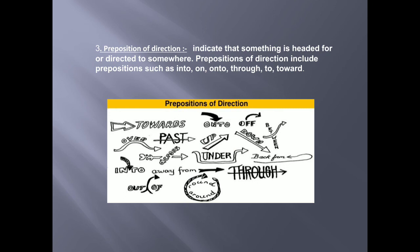Now, we will move on to the third one that is preposition of direction which indicates that something is headed for or directed to somewhere. Prepositions of direction include prepositions such as into, on, onto, through, to and toward. You can go through the picture and there are some examples of preposition of direction.